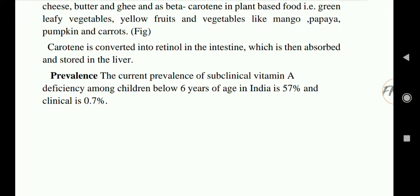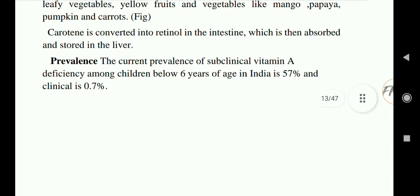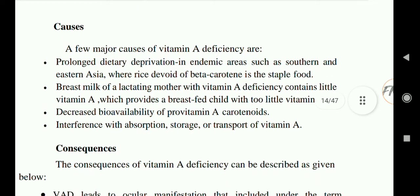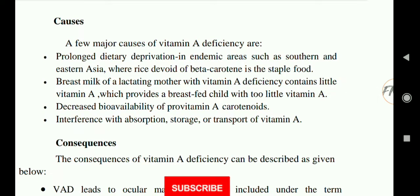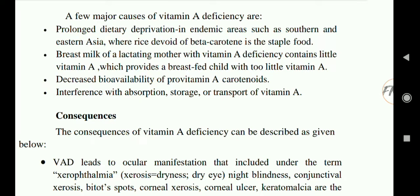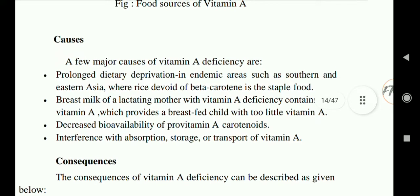Regarding prevalence, the current prevalence of subclinical Vitamin A deficiency among children below six years of age in India is 57 percent, and clinical deficiency is 0.7 percent. The major causes of Vitamin A deficiency include: prolonged dietary deprivation in endemic areas such as southern and eastern Asia where rice, devoid of beta-carotene, is the staple food; breast milk of a lactating mother with Vitamin A deficiency containing little Vitamin A; decreased bioavailability of pro-vitamin A carotenoids; and interference with absorption, storage or transport of Vitamin A.